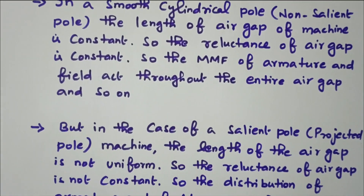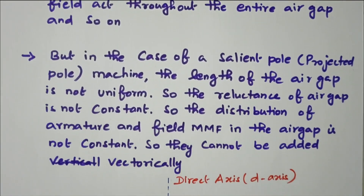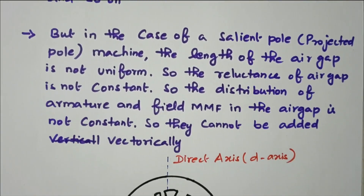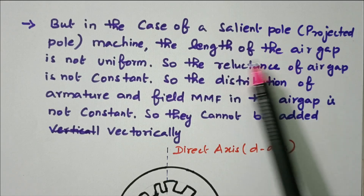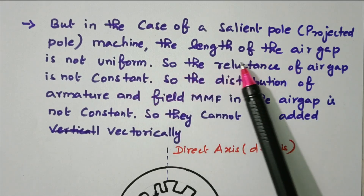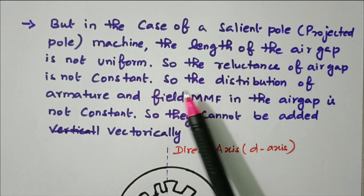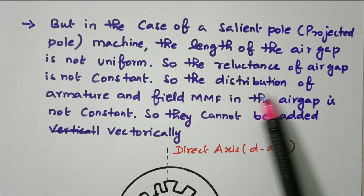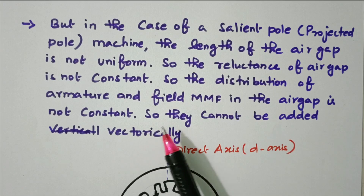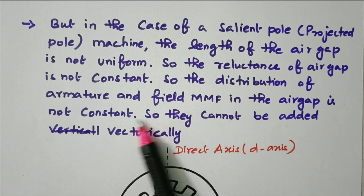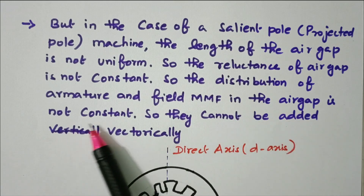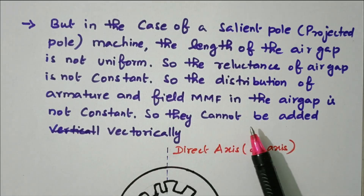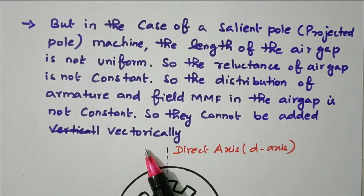In case of salient pole — that is, a projected pole machine — the length of the air gap is not uniform. So the reluctance of the air gap is not constant. Therefore, the distribution of armature and field MMF in the air gap is not constant, and so they cannot be added vectorially.